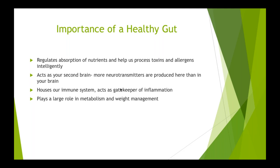The enteric nervous system consists of two thin layers of more than 100 million cells lining our GI tract from the esophagus to the rectum. This is a bidirectional communication system — we've all experienced this: feeling anxious and getting butterflies, or having to run to the bathroom. There's also a well-established link between conditions like irritable bowel syndrome and anxiety and depression, which is one example of the gut-brain connection.